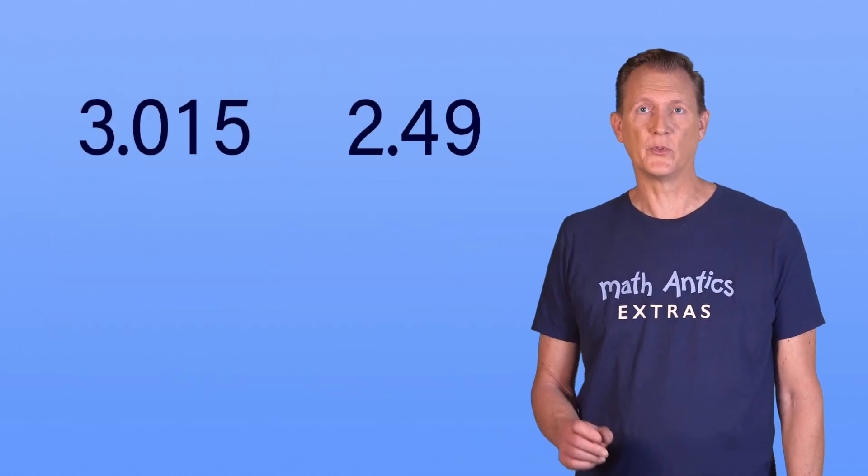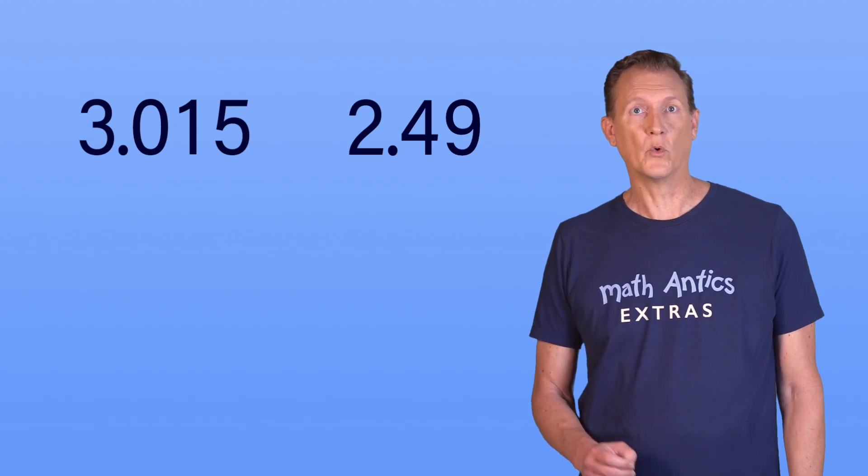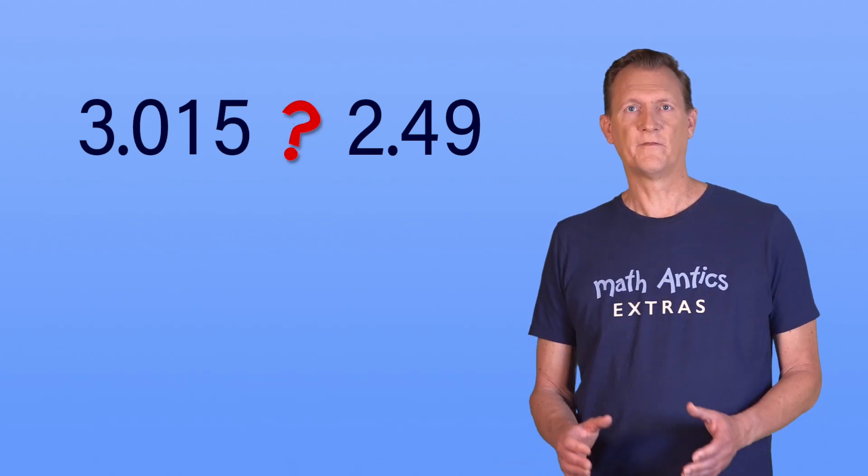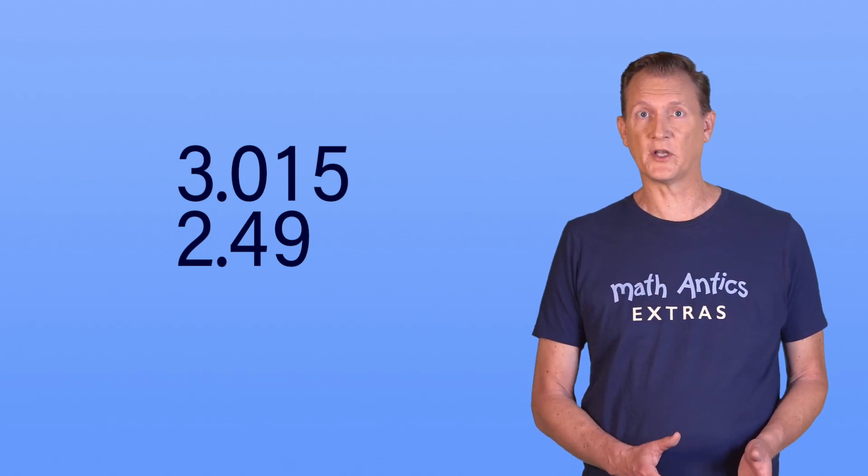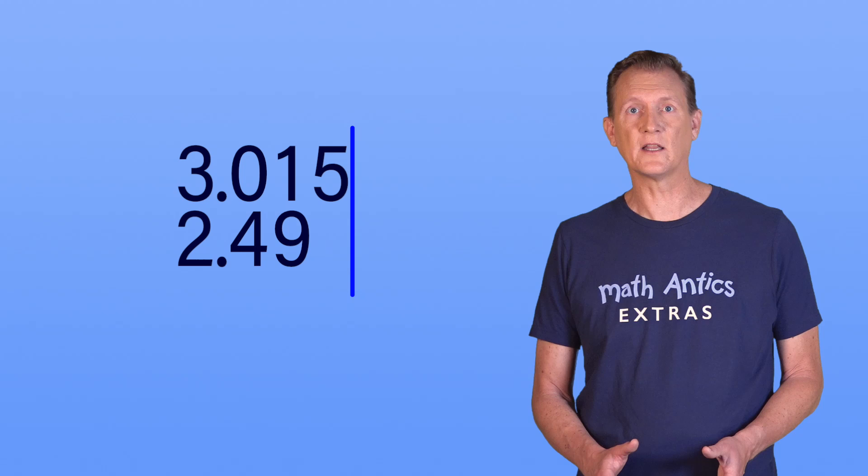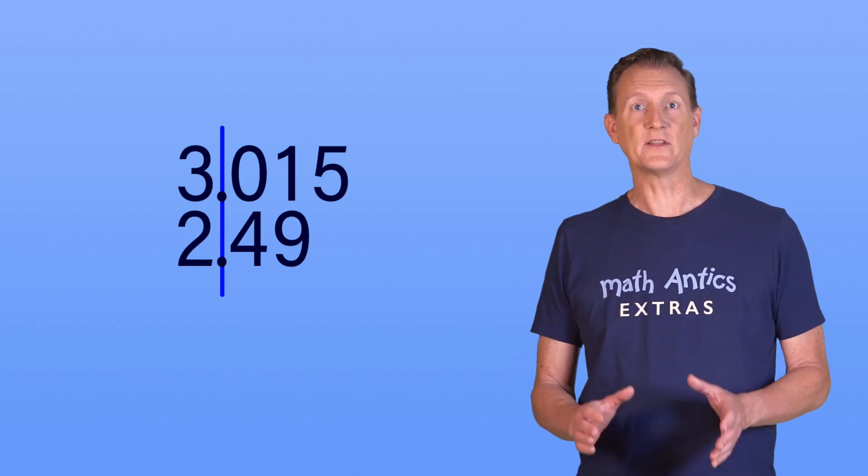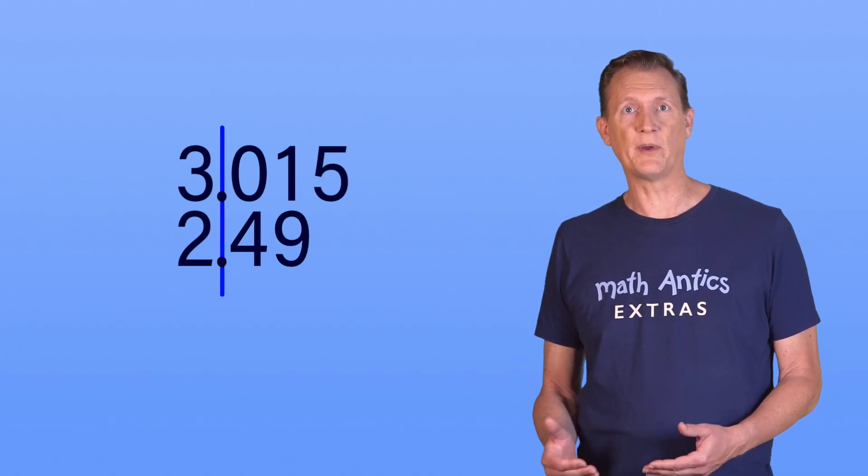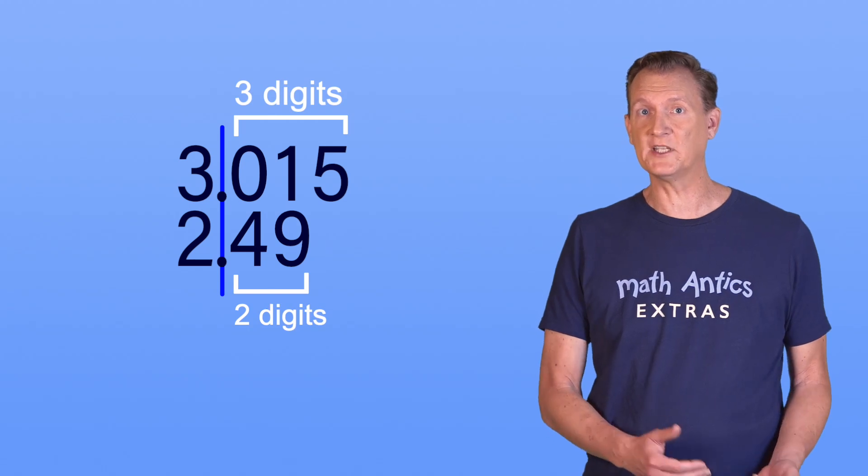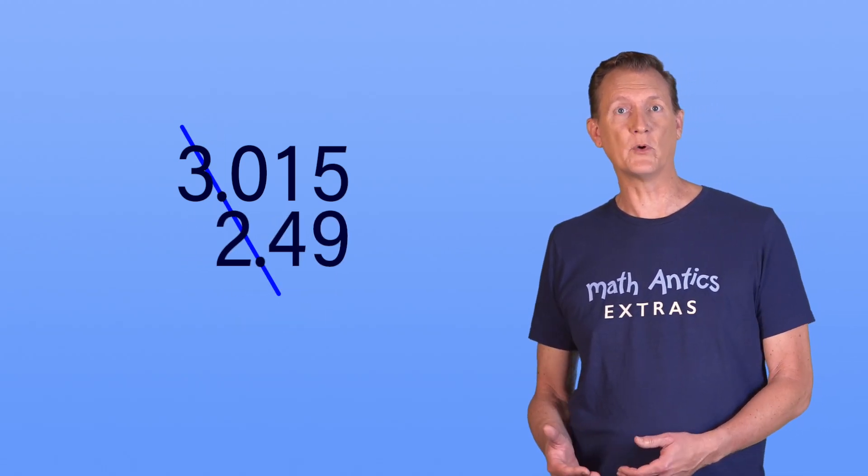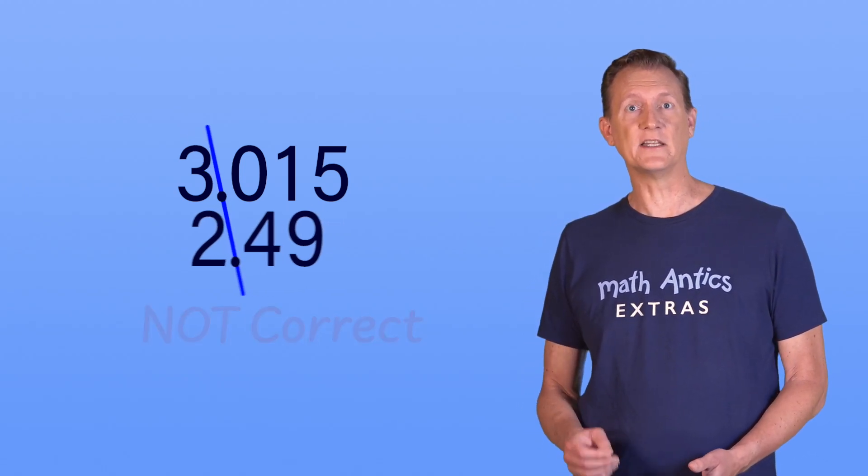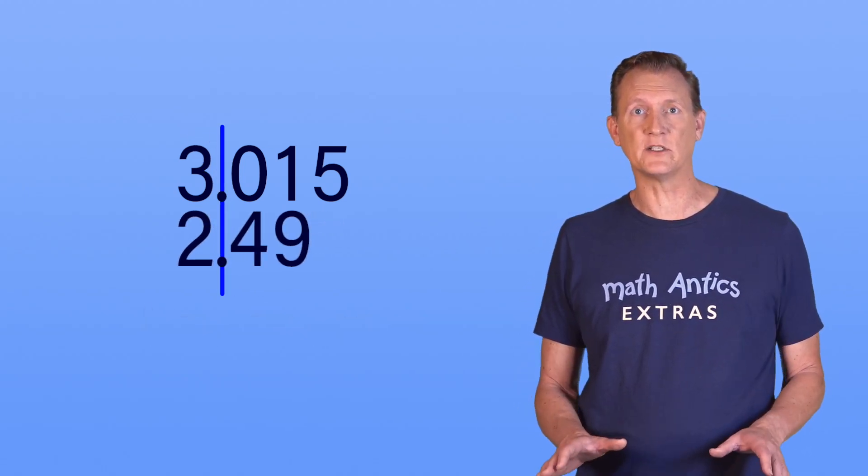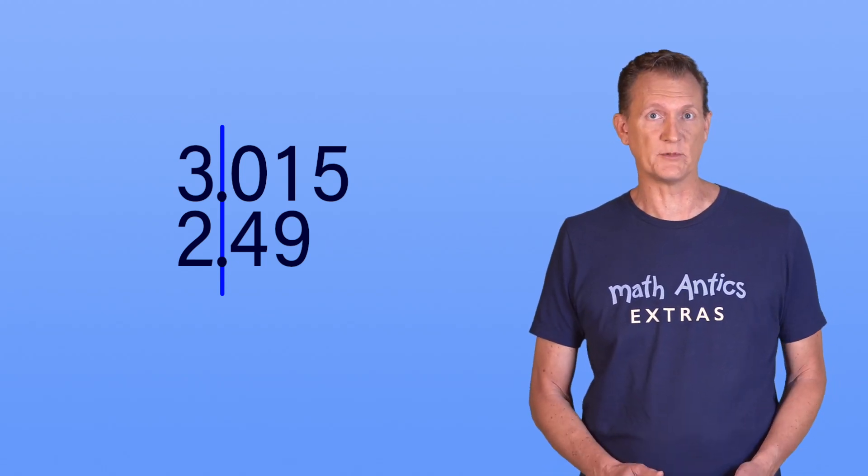Let's start by comparing these two decimal numbers, 3.015 and 2.49. Which has the greatest value? First, we line up the number places. But instead of lining up the number place on the right hand side like we did with whole numbers, we need to line up the decimal points. That's really important because the decimals you're comparing might have a different number of decimal digits, like these do. And if you just line up the rightmost digits, the number places won't be aligned correctly. But when you align the decimal points, no matter how many digits are on either side of it, the number places are always lined up too.